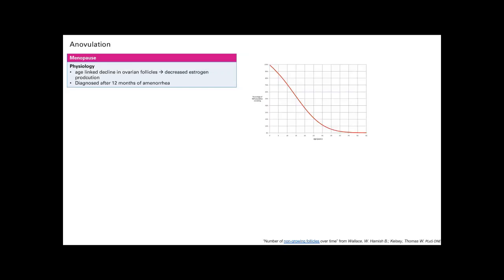So let's talk about anovulation, which is what many women can complain about. There can be many reasons. The first thing we can talk about is menopause. This is actually a physiologic process, which is related to the decline in ovarian follicles as you age.